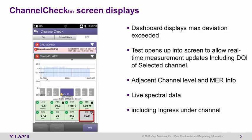DQI, or digital quality index, is indicating that there are no errors in the bitstream whatsoever — not one per billion, but absolutely zero errors in the bitstream currently.